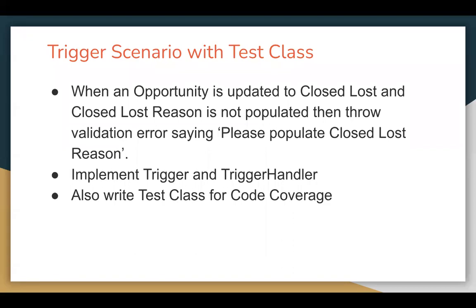The requirement is: when an opportunity is updated to Closed Lost and the Closed Lost Reason is not populated, then we need to throw a validation error saying 'Please populate Closed Lost Reason.' Here, Closed Lost is basically a picklist value of the Stage field, and Closed Lost Reason will be a separate field.